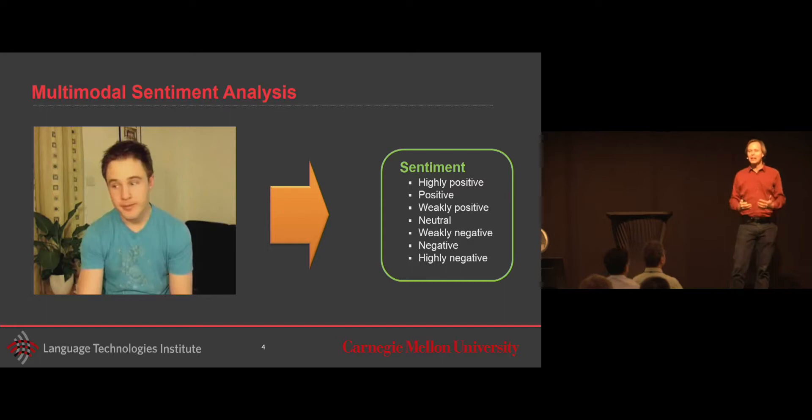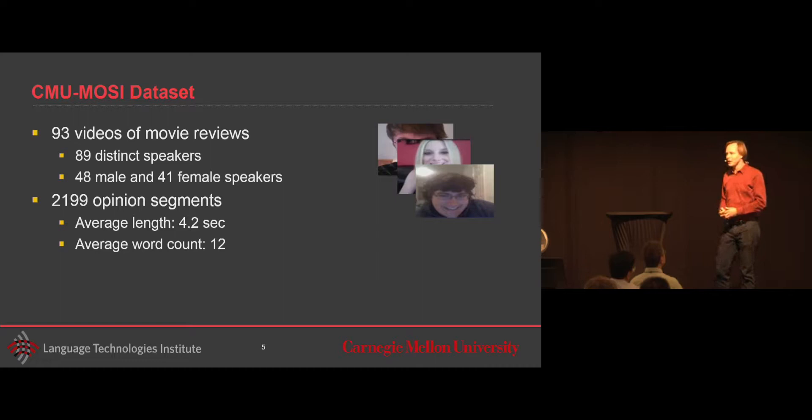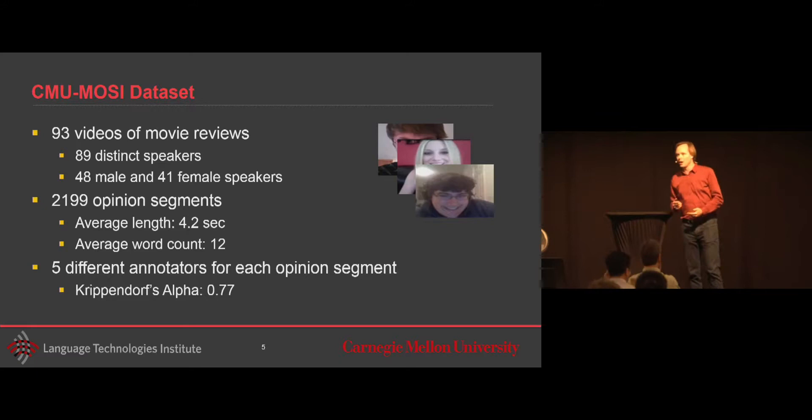So we built a data set. We call it the CMU MOSI data set. It's publicly available. It looks small because it's 93 videos, but it's a total of 2,200 segments. Segments are subjective segments. So given these videos, which are on average maybe a minute or two, we do subjectivity segmentation. And from the subjective segment, go ahead and do annotation with Mechanical Turk. And the one thing that's really important when we look at all these data sets is Krippendorf Alpha. Or Cohen Kappa will be another one. Is the agreement between the coders. And that is one of the highest that I've seen in any data set, multiple data set for emotion recognition. And that's really important because that means that humans are agreeing with each other when doing this task. So let's try to have computers also doing the same task.